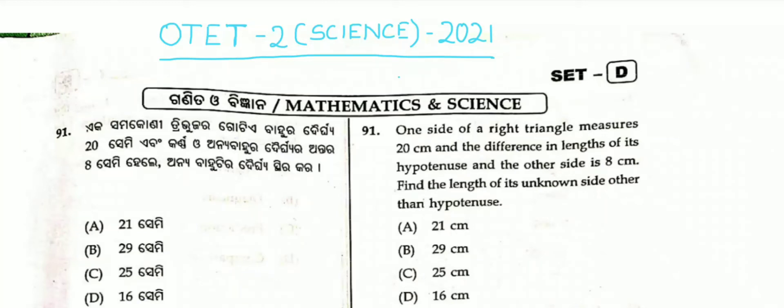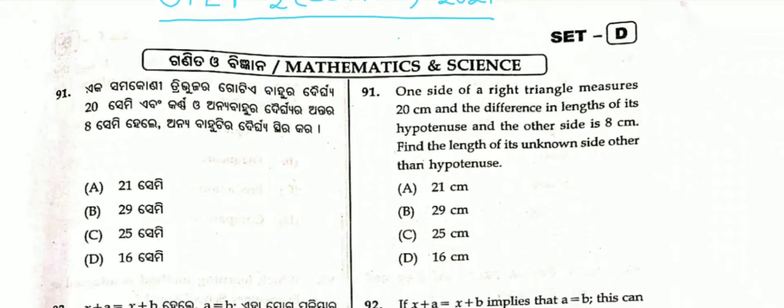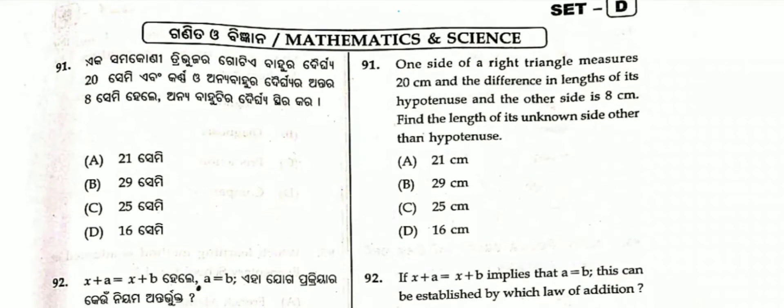In this video, we will go to Opti-T Paper 2 2021 exam, science string row. This exam will be discussed in mathematics question resolution. So, question number 91 recount.